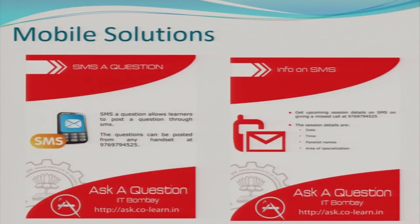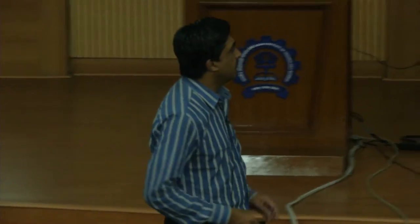First is by mobile. You can just SMS the question and it will be displayed on the forum automatically. Another solution is that you can give a missed call to the mentioned number and you will get an SMS giving the next session date, which professor is participating, and what the specialization of that session is. There are apps available for almost all operating systems — Android, iPhone, Windows, BlackBerry, and even Firefox.